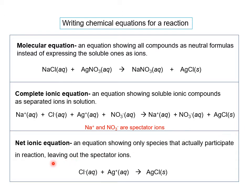In the net ionic equation, any species considered a spectator ion is left out. In this reaction, notice that sodium appears on both sides of the equation, and same thing with nitrate — nitrate on the left side, nitrate on the right side. Because sodium and nitrate did not change from left to right, they are called spectator ions. When we write the net ionic equation, we leave out the spectator ions. The reactants in the net ionic equation are the two ions that form a non-aqueous product — the product could be solid, liquid, or gas, but not aqueous.